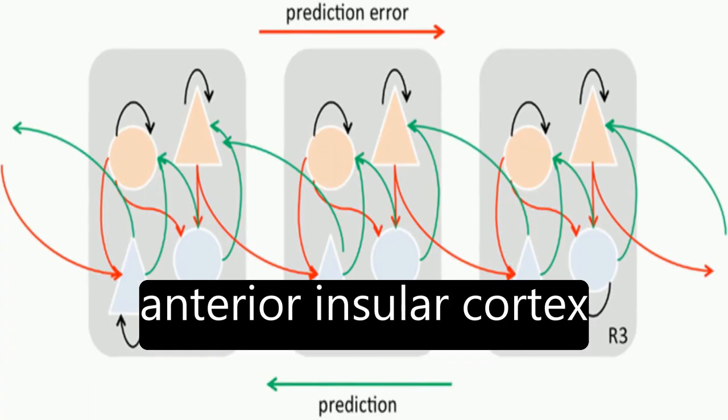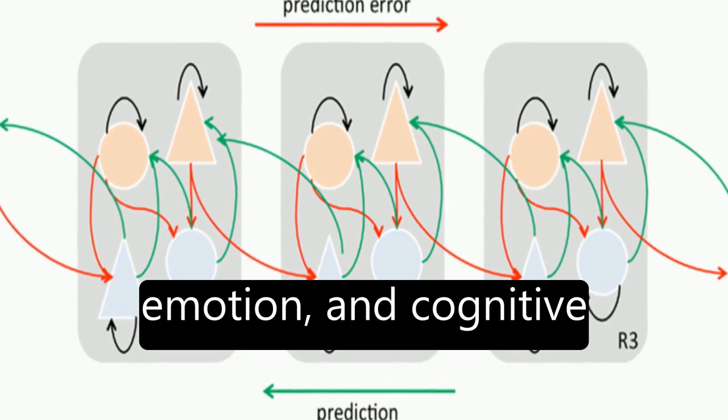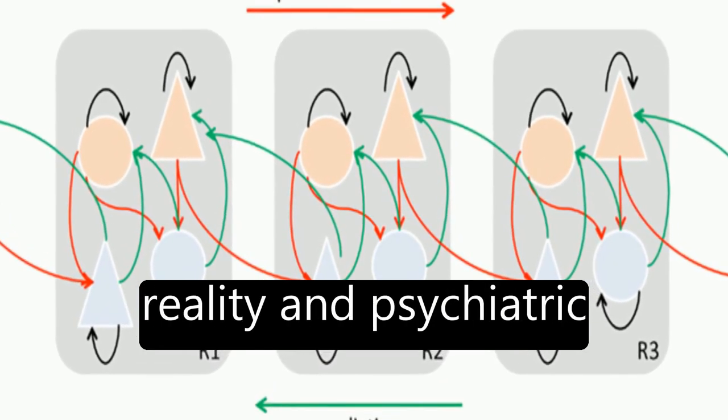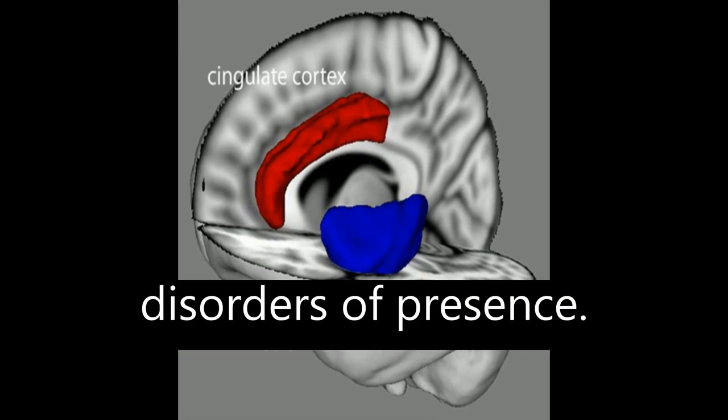The model draws on the role of the anterior insular cortex in interoception and emotion, and cognitive neuroscience evidence from studies of virtual reality and psychiatric disorders of presence.